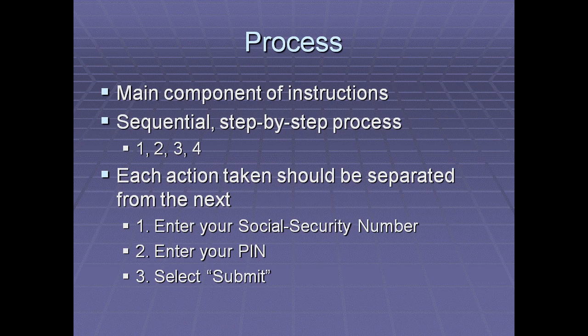Getting to the process — this is the main component of the instructions and what everyone thinks of first. The first thing to understand is that steps are sequential, obviously, and they should be numbered rather than using letters. Why not letters? Because you only have 26. Numbers allow you to go to 150 or 500 steps without any problem. Each action should also be separated from the next — for example: Step 1, enter your social security number; Step 2, enter your PIN; Step 3, select Submit. Each is a single, distinct action.